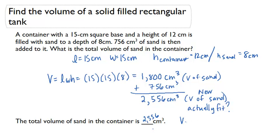The volume of the container equals 15 times 15 times 12. And if I multiply 15 times 15 times 12, I get 2,700 cubic centimeters. And since 2,556 cubic centimeters is smaller than 2,700, then that much sand does actually fit in the container.